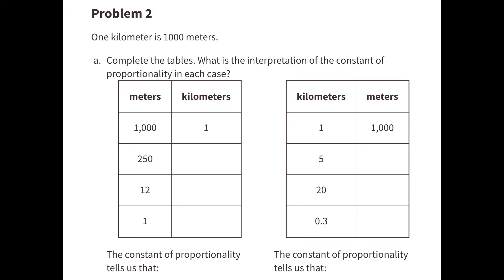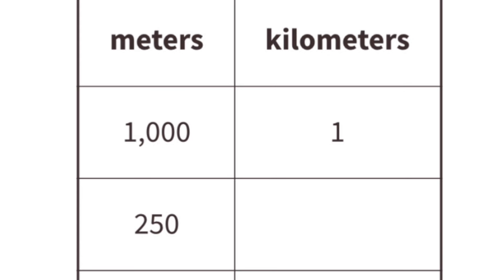Number 2. 1 kilometer is 1,000 meters. A. Complete the tables. What is the interpretation of the constant of proportionality in each case? 1,000 meters for every 1 kilometer, or 1 kilometer for every 1,000 meters. This information tells me that 1 kilometer is equal to 1,000 meters.